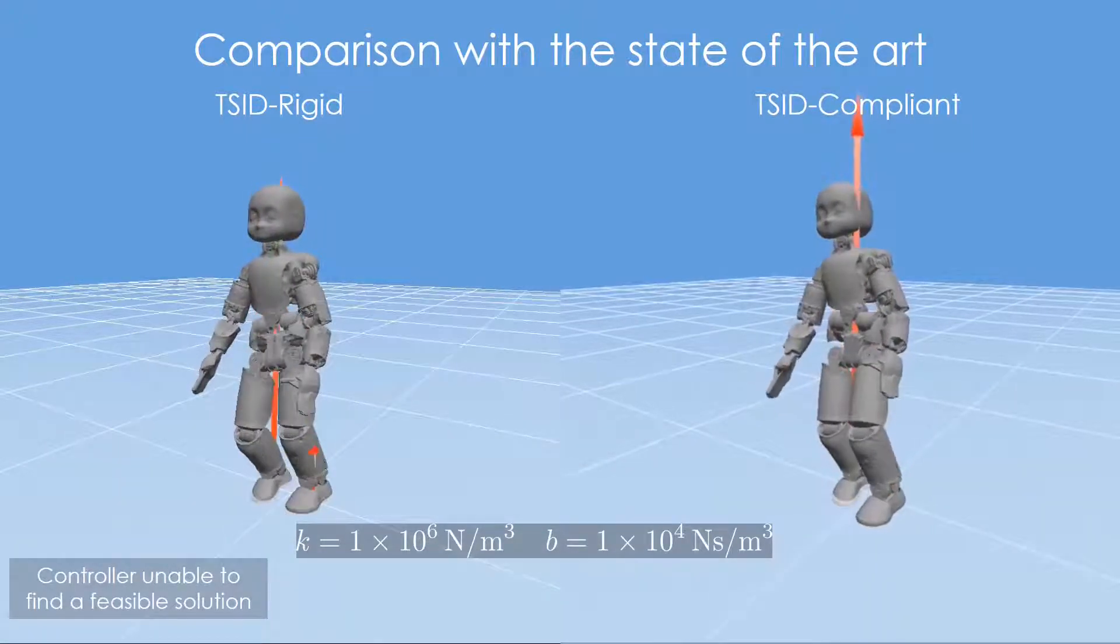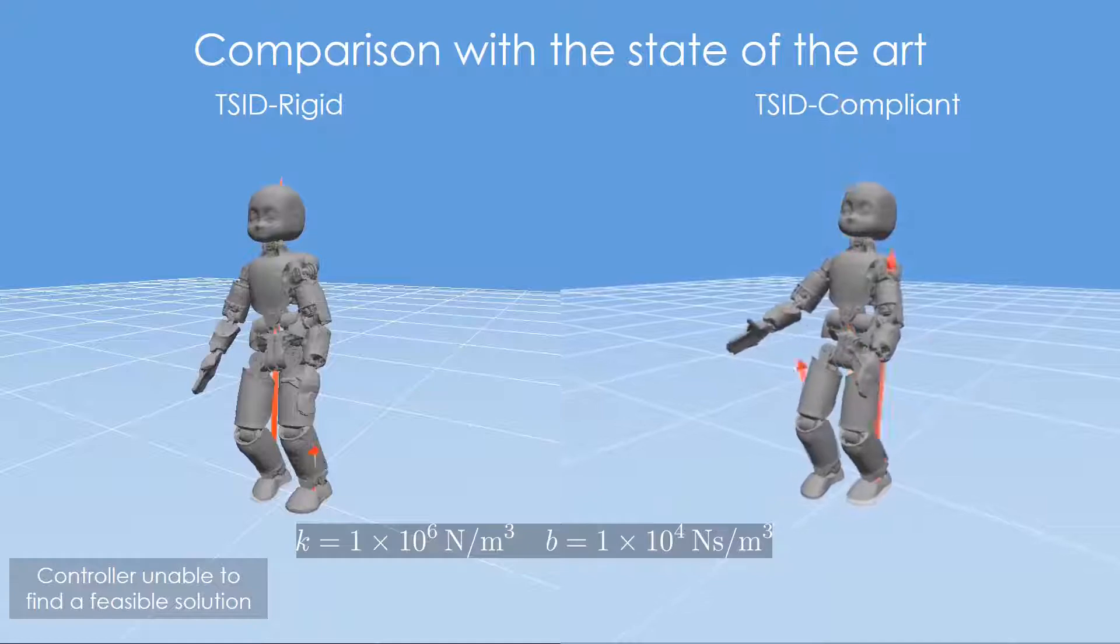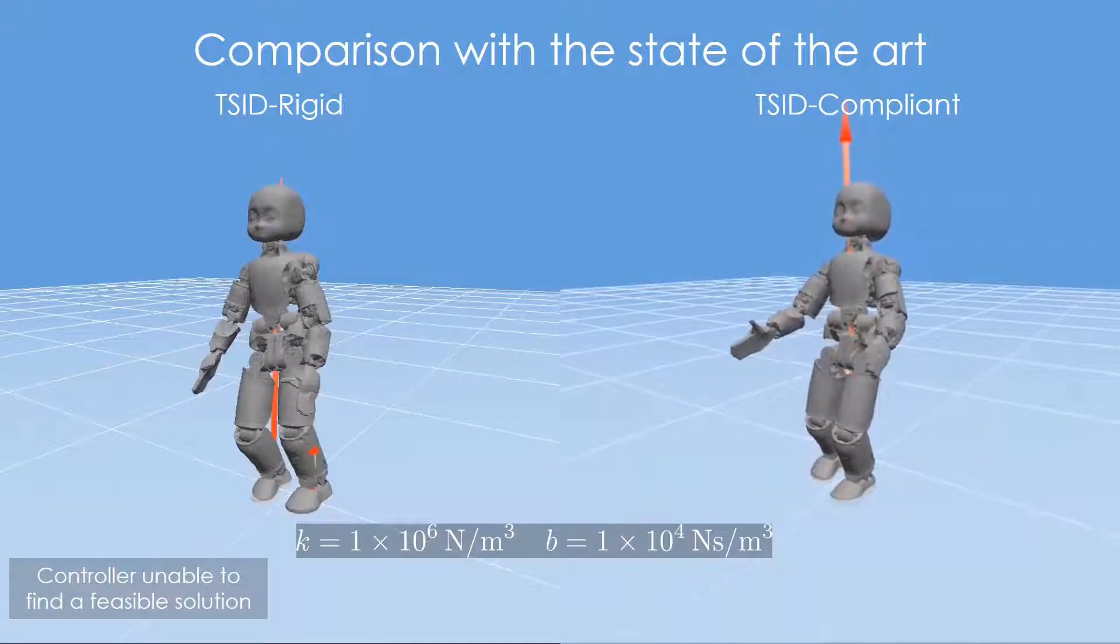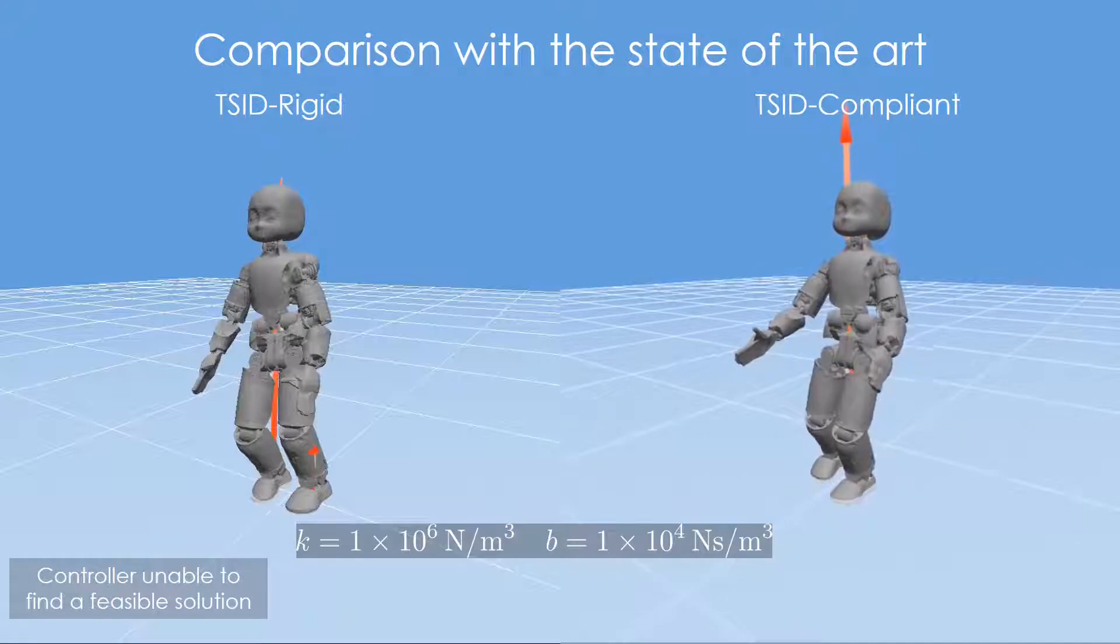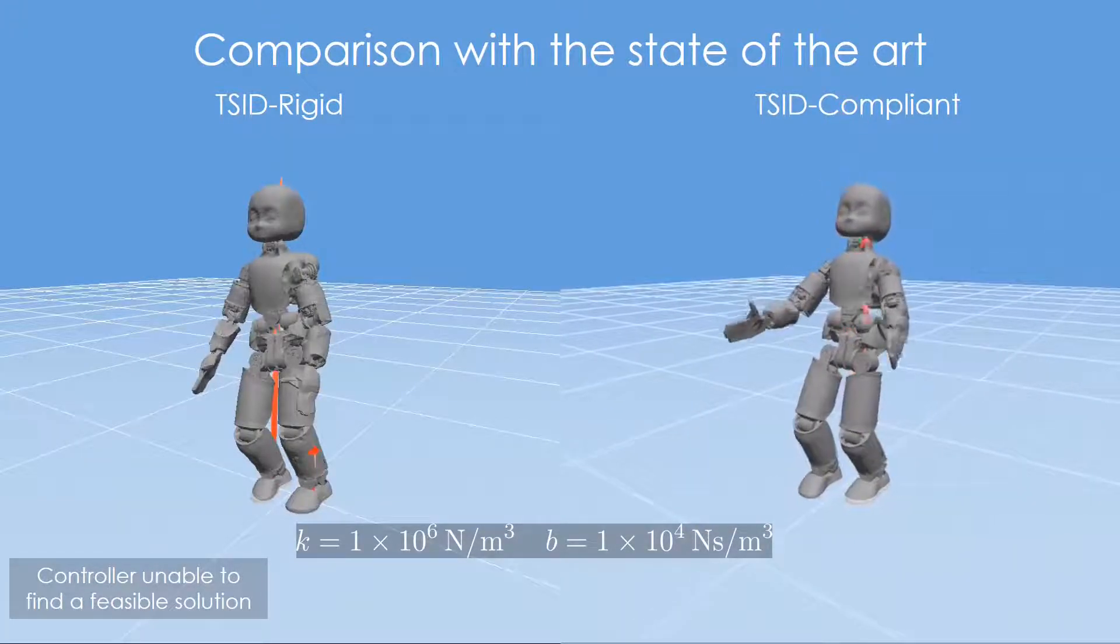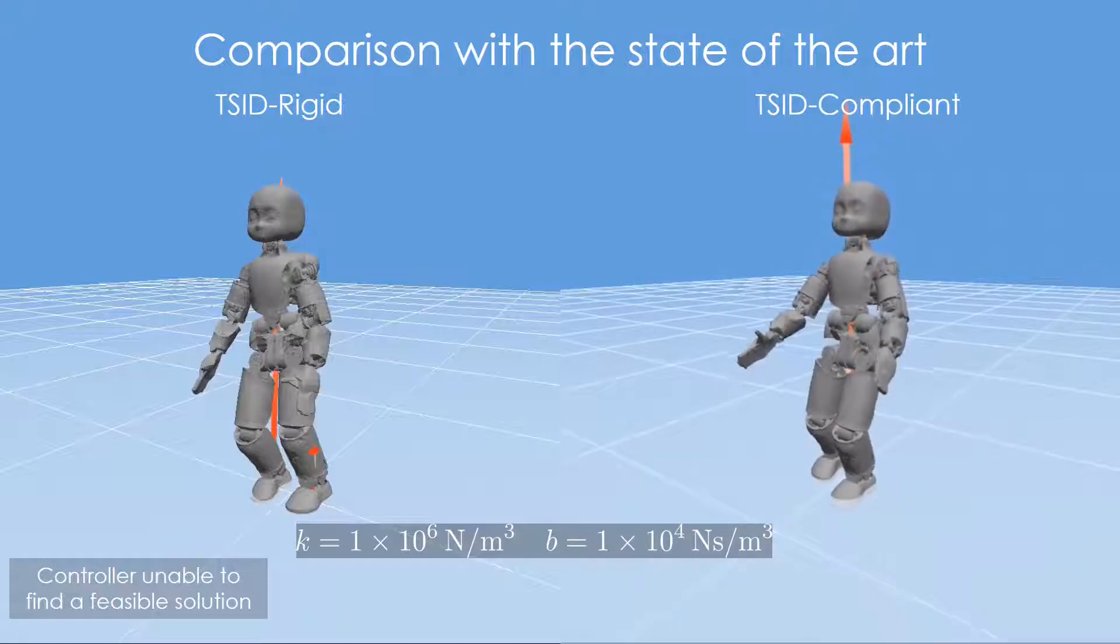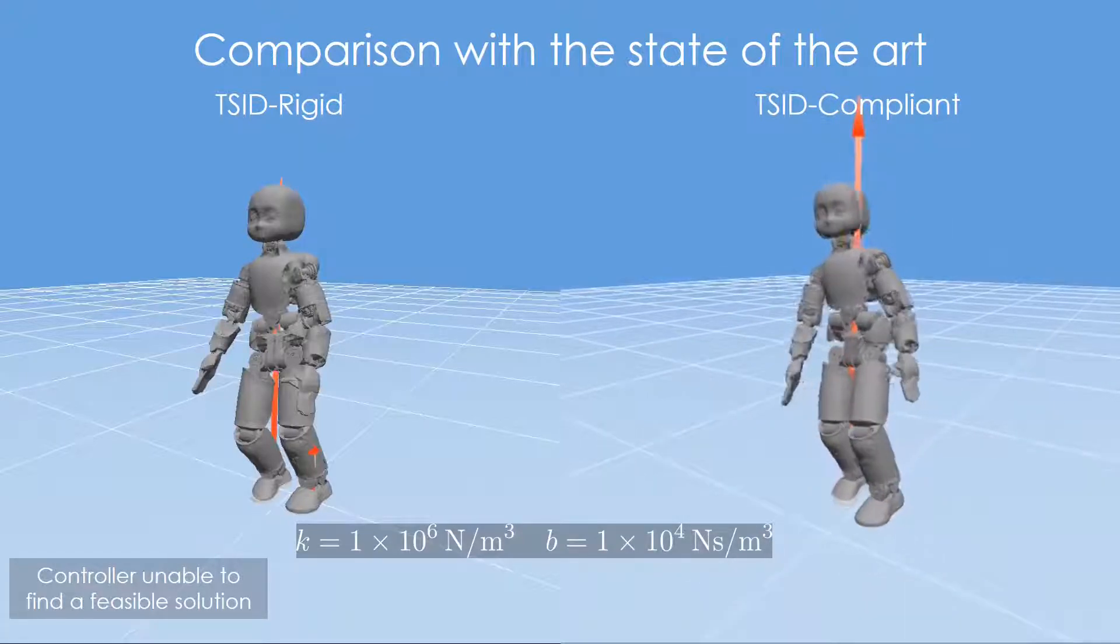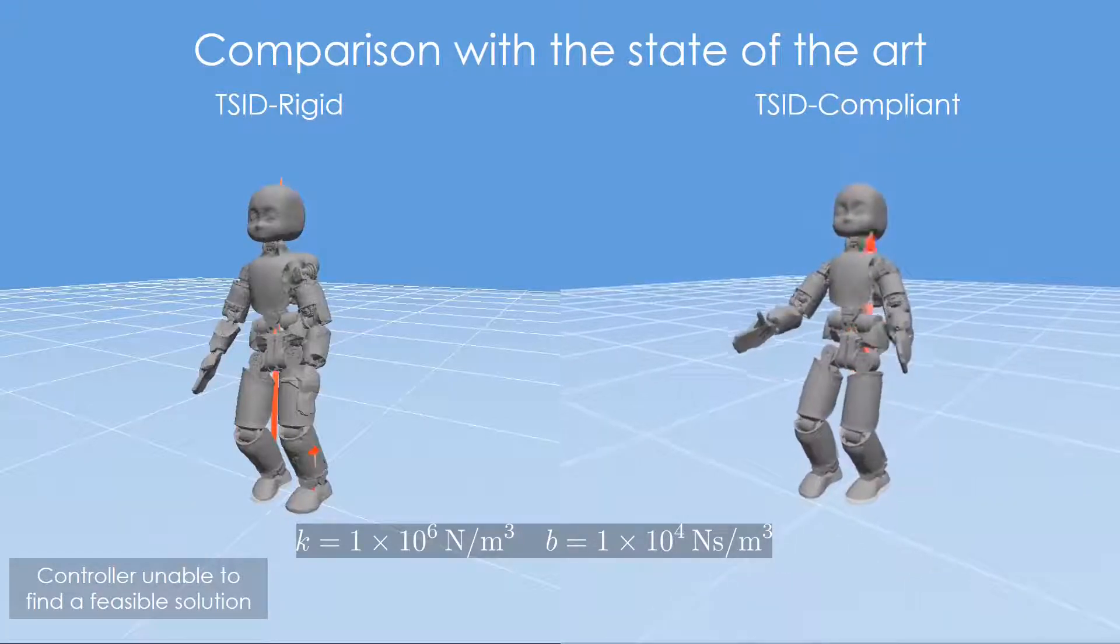If the compliance of the environment increases, the TSID-Compliant is still able to guarantee good tracking performances. On the other hand, the TSID-Rigid requires high variations of the robot accelerations, and after a few seconds, it fails in finding a feasible solution.